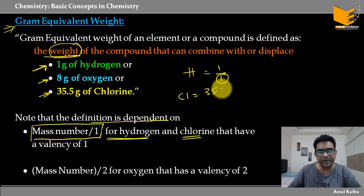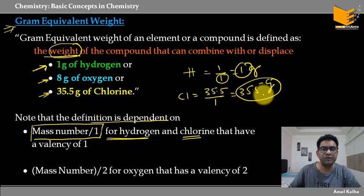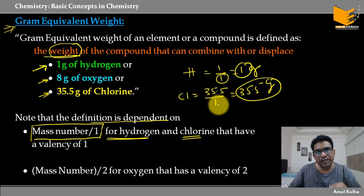Chlorine का mass होता है 35.5 divided by 1, तो इसका answer 35.5 आ रहा है। Hydrogen का answer 1 आ रहा है, chlorine का 35.5। तो 1 gram of hydrogen या 35.5 gram of chlorine के साथ जो mass of compound react करेगा, वही उसका equivalent weight रहेगा। Hydrogen और chlorine की valency 1 रहने के वजह से denominator में 1 आया है।